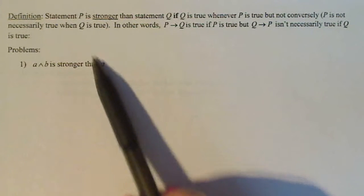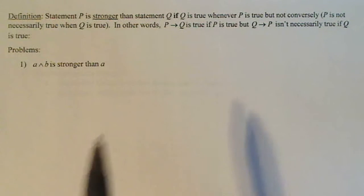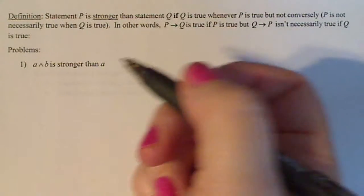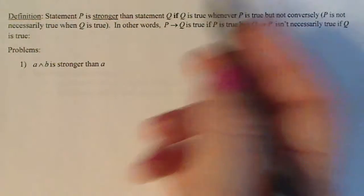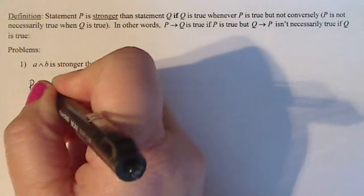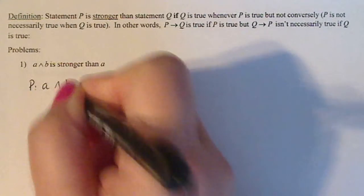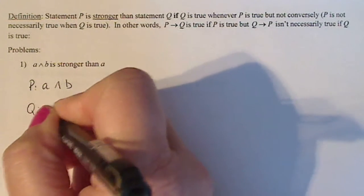So let's take a look at this problem. I'm not going to do it quite in terms of truth tables, I'm going to do it in a different way. So in this case we do need to know what statement is P and what statement is Q in order to follow the definition. So I'm going to define statement P as A and B, and then statement Q as A.